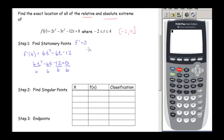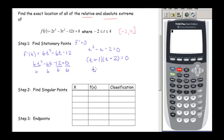Now we have t squared minus t minus 2 equals 0, which is a quadratic that's pretty easy to factor. We get t minus 2 times t plus 1 equals 0, giving us stationary points at t equals negative 1 and t equals 2.